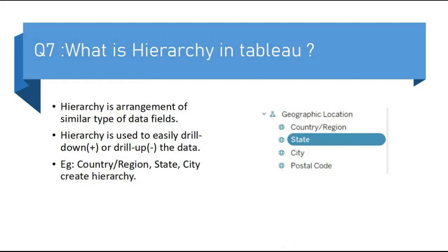So the next question is: what is hierarchy in Tableau? Hierarchy is the arrangement of similar types of data fields. Hierarchy is used to easily drill down and drill up the data. Drill down is represented by plus and drill up is represented by minus. For example, I have created one geographic location hierarchy which contains similar type of data like country, division, state, city, and postal code.